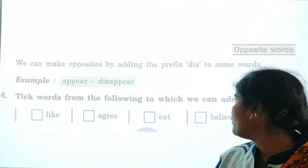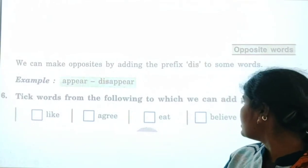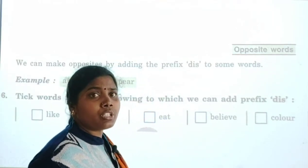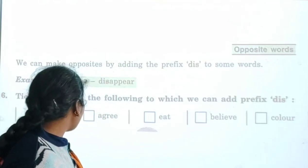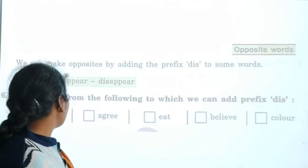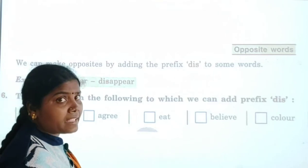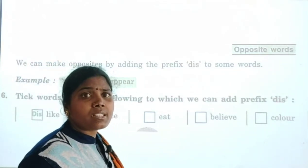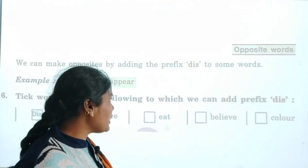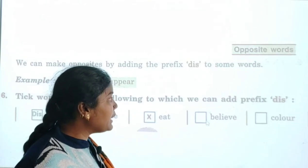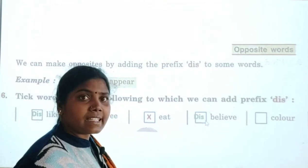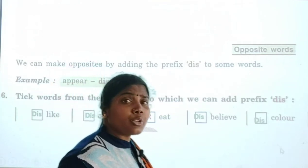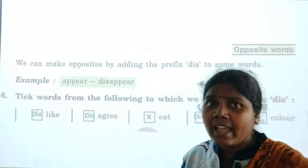Now take words from the following to which we can add the prefix 'dis.' Here we have five words. We need to identify which ones can take the prefix. 'Like' — dislike. 'Agree' — disagree. 'Eat' — 'dis-eat' does not work, so we put a cross on that. 'Bleep' — 'dis-bleep.' 'Color' — 'discolor.' So we learned which words can take the prefix and which cannot. Prefix means something we add before the word.